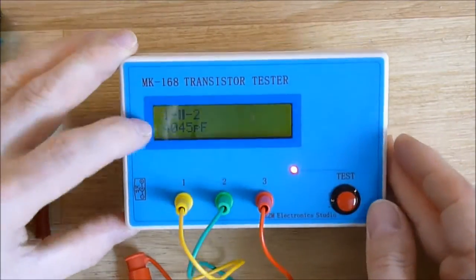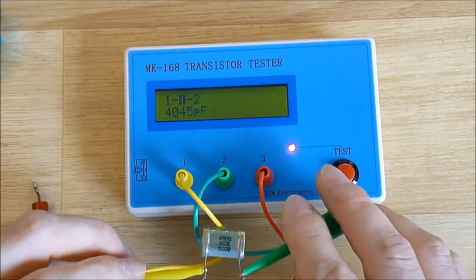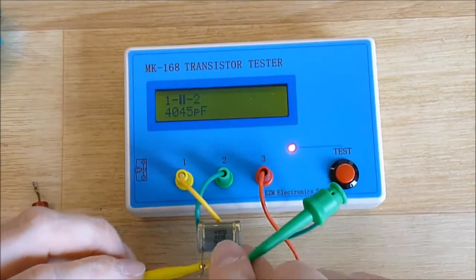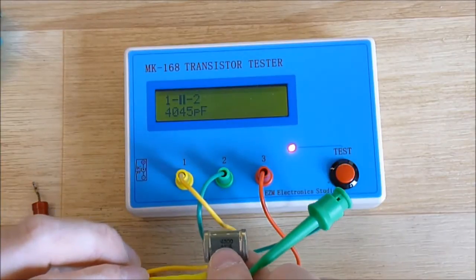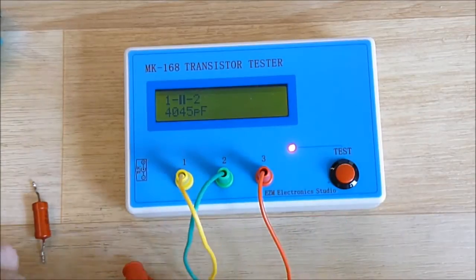You can see, it detects 4000 picofarads between pins 1 and 2. It's rated 10% for 1300. So yes, it is a little low, this one.